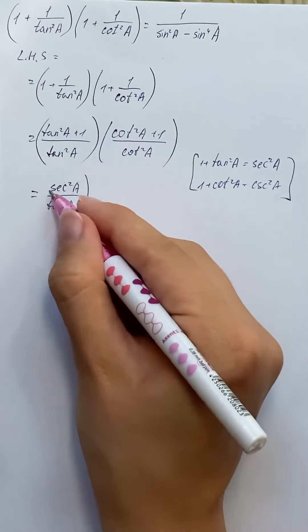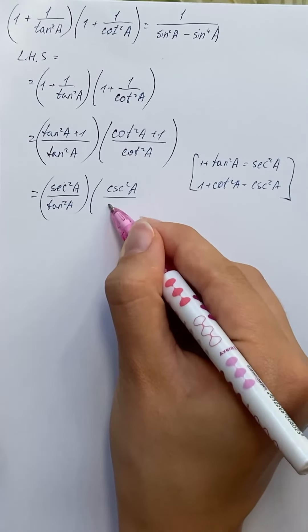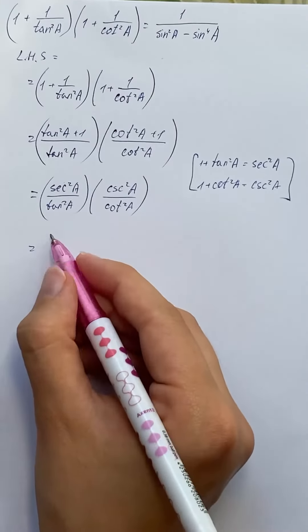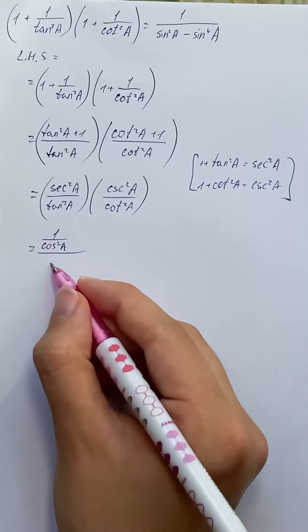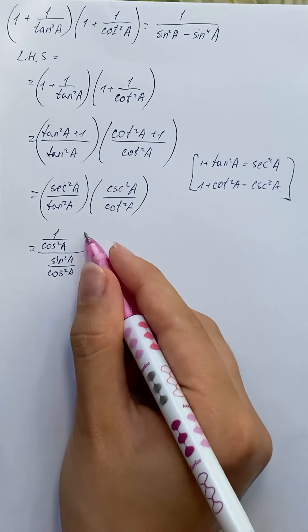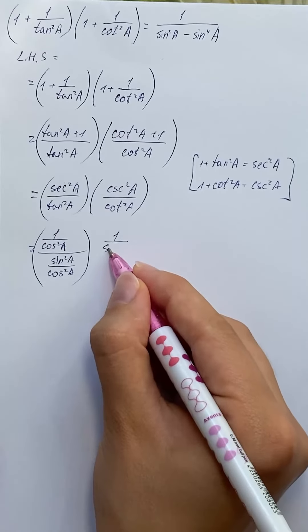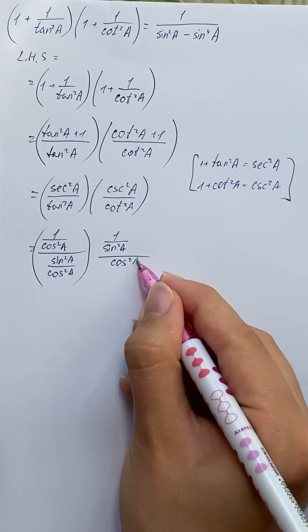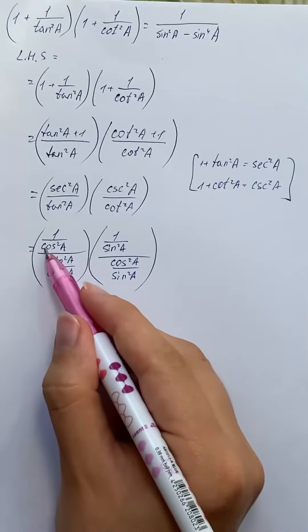Note that sec²a = 1/cos²a and tan²a = sin²a/cos²a, and csc²a = 1/sin²a while cot²a = cos²a/sin²a. So we can cancel cos²a and sin²a, and we get (1/sin²a) times (1/cos²a).